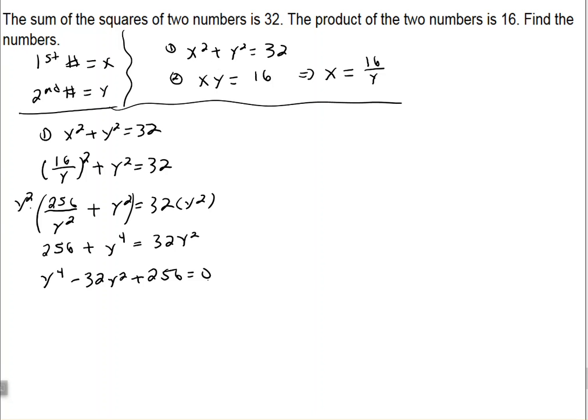So I can factor this. This y to the fourth will become y squared. And then minus 16 squared. It's one of those perfect square trinomials there.